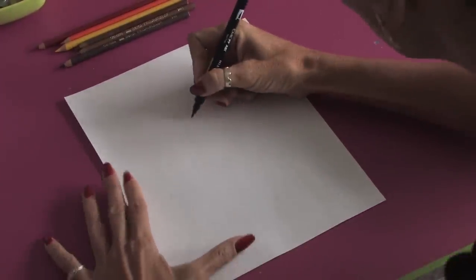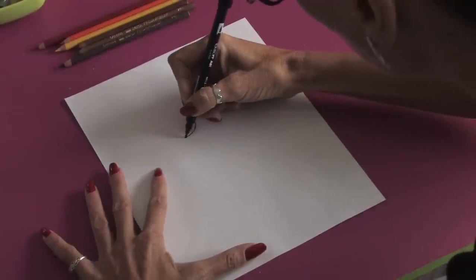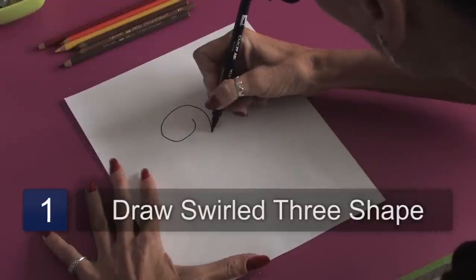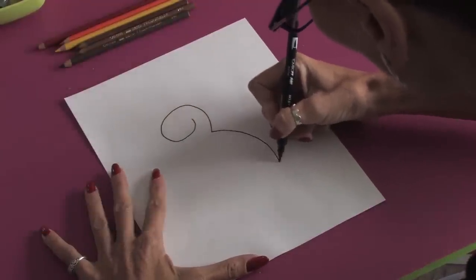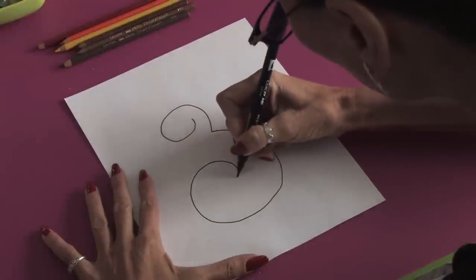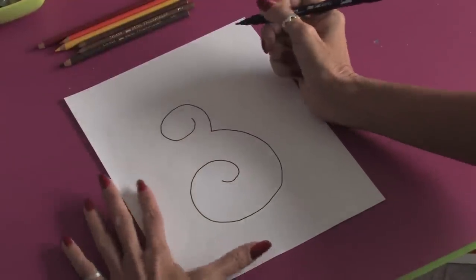We're going to start off by doing a nice long swirly shape, coming around for the head, stopping here and doing one more big long swirly shape to get in the body. It almost looks like the number three.